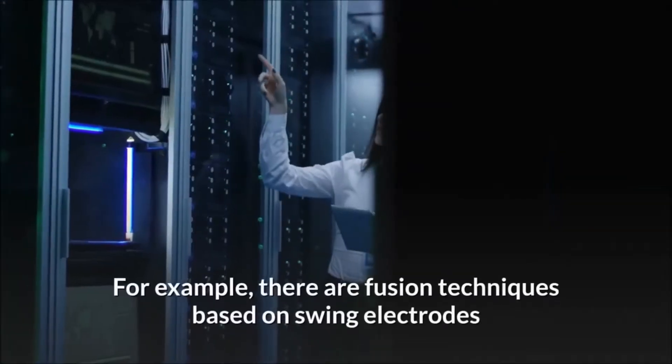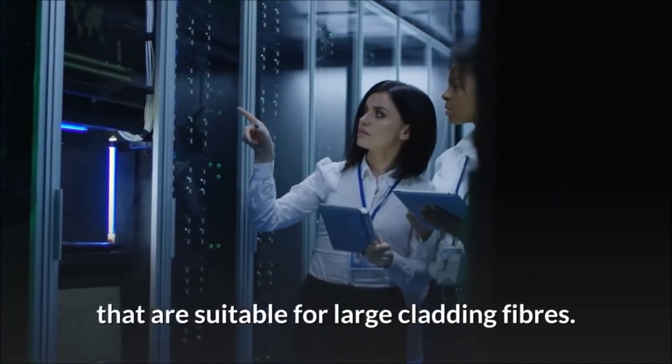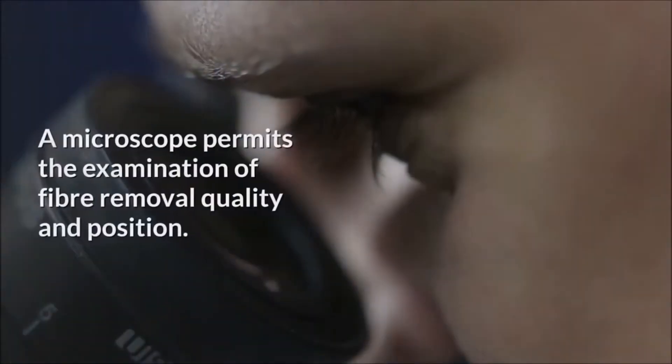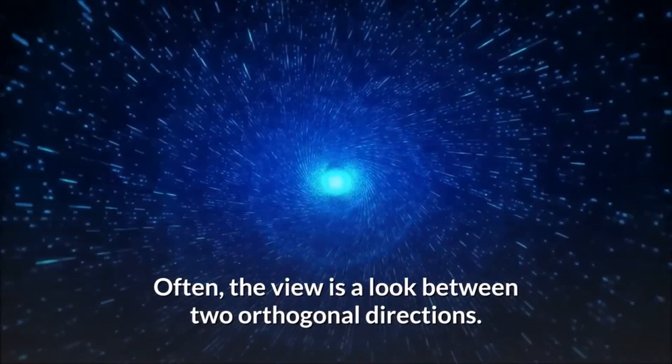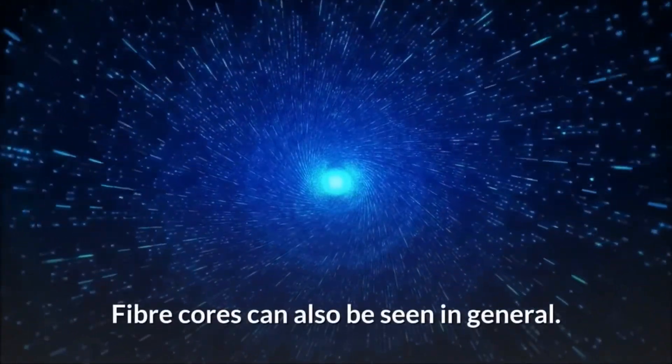For example, there are fusion techniques based on swing electrodes that are suitable for large cladding fibers. A microscope permits the examination of fiber removal quality and position. Often, the view is a look between two orthogonal directions. Fiber cores can also be seen in general.